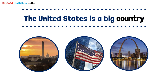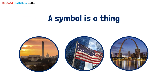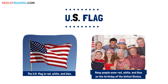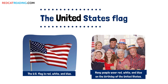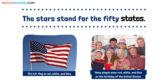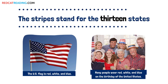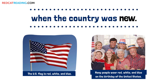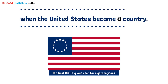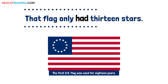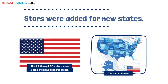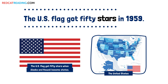The United States is a big country with many symbols. A symbol is a thing that stands for something else. The United States flag is an important symbol. The stars stand for the 50 states. The stripes stand for the 13 states when the country was new. The first U.S. flag was made when the United States became a country. That flag only had 13 stars. Stars were added for new states. The U.S. flag got 50 stars in 1959.